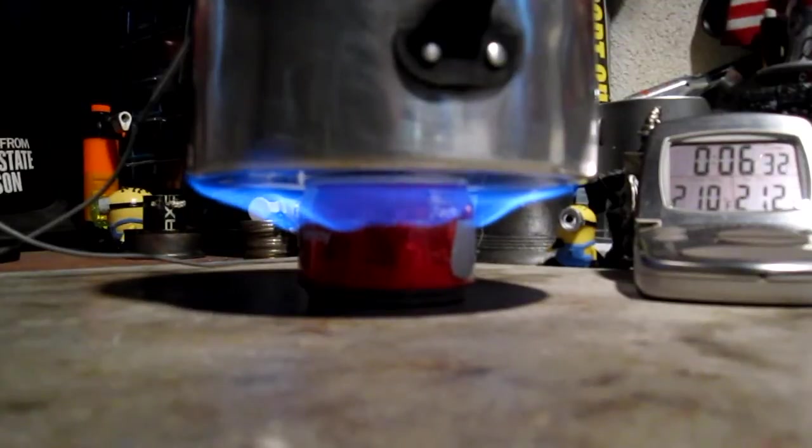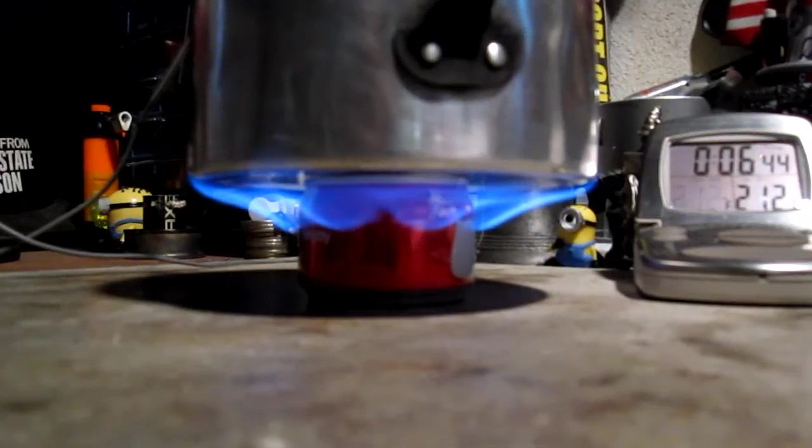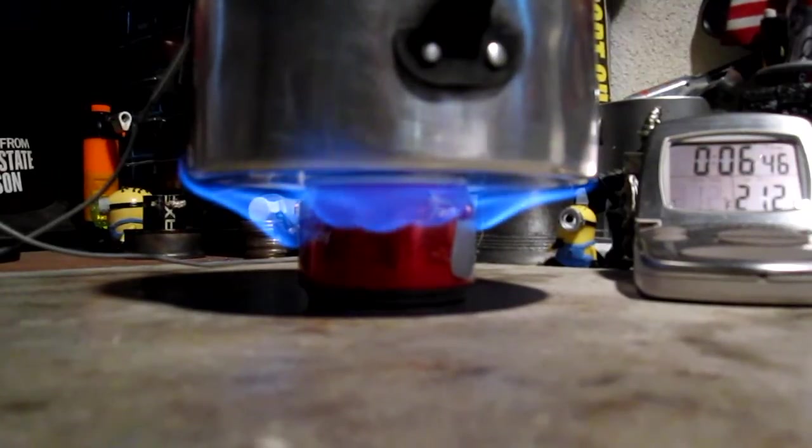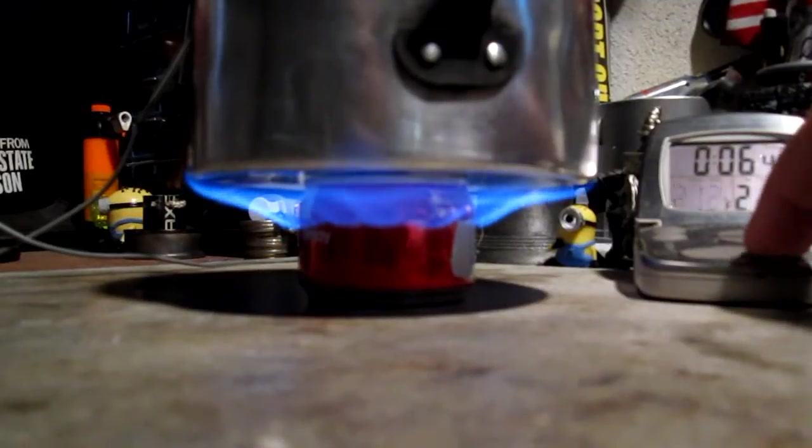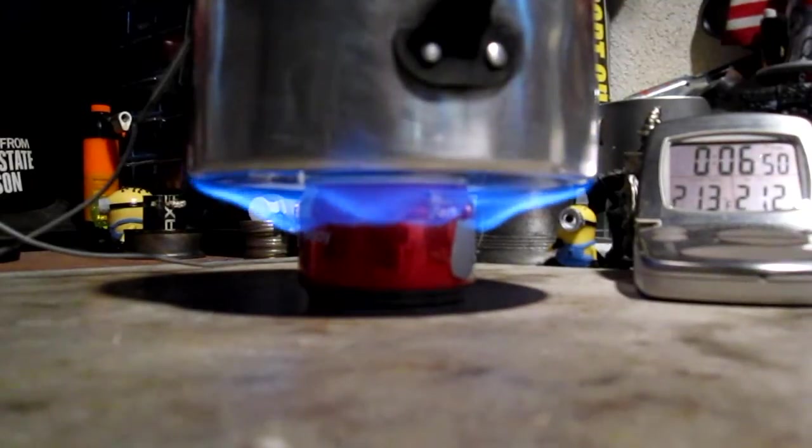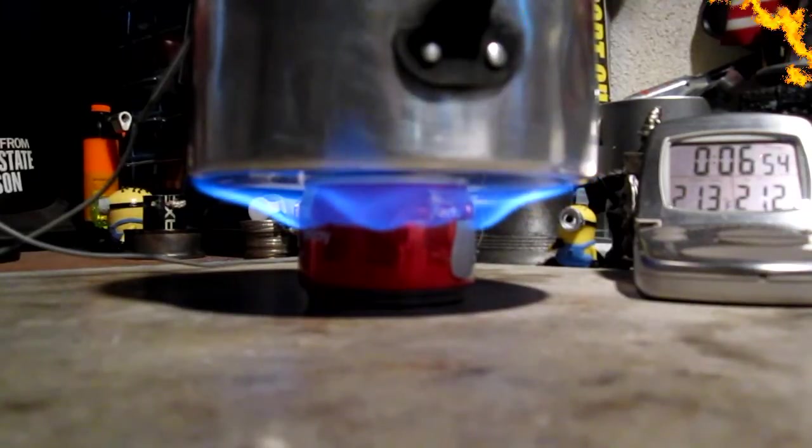There we have two ten, two eleven, two twelve and six forty-one. Okay, so that was the two cups starting at sixty degrees. Came to a boil in six minutes forty-one seconds. Now let's see how long it takes to run out.